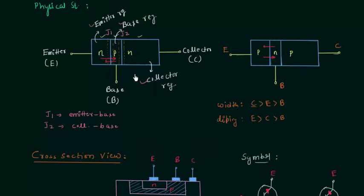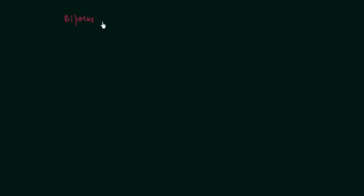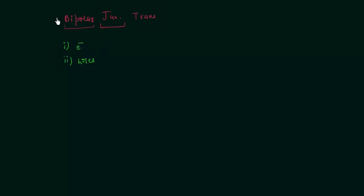That's why knowledge of the diode is very important to understand transistors. Generally, the NPN transistor is used because the mobility of electrons is more than the mobility of holes. Now, the meaning of 'bipolar': there are two types of charge carriers in transistors — electrons and holes. Electrons are negatively charged and holes are positively charged, so we have two types of polarities. Because of this, we call the transistor a bipolar device.